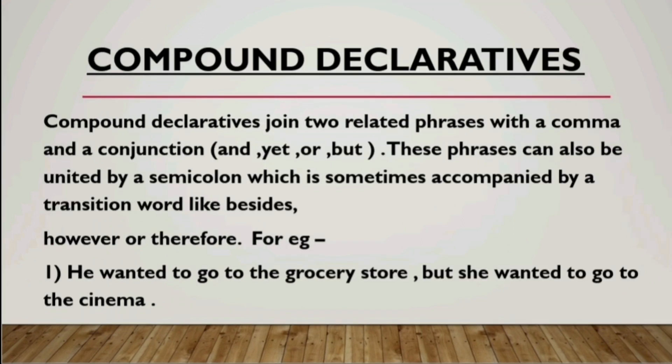The next type of declarative sentence according to Type 1 is compound declaratives. Compound declaratives join two related phrases with a comma. It will join two connected phrases — a phrase being a group of words that does not contain a finite verb. So a compound declarative joins two related phrases separated by a comma as well as a conjunction, and that conjunction could be 'and,' 'yet,' 'or,' 'but,' etc.